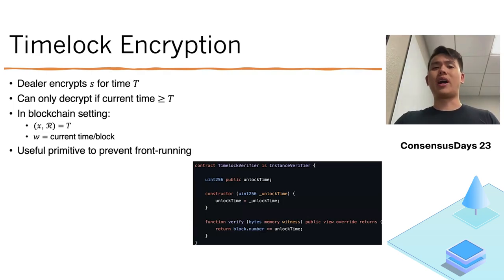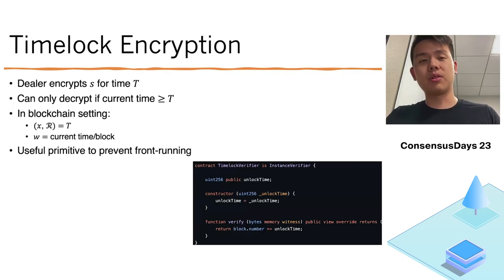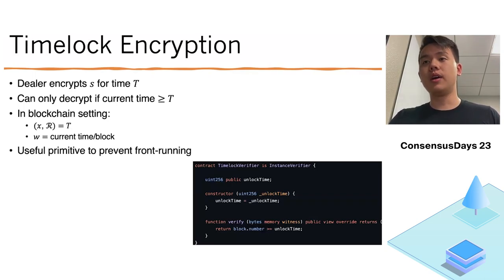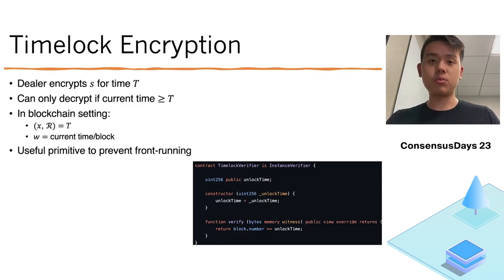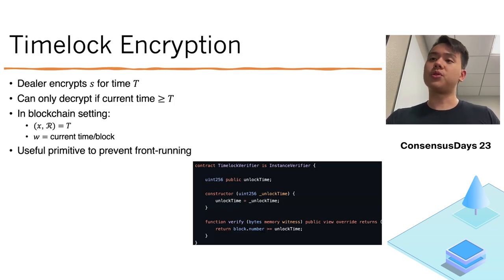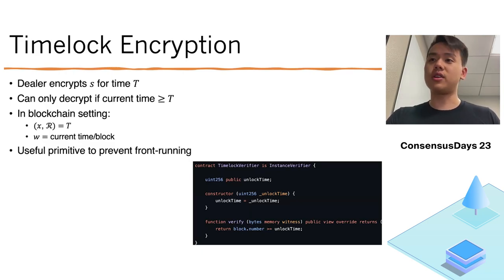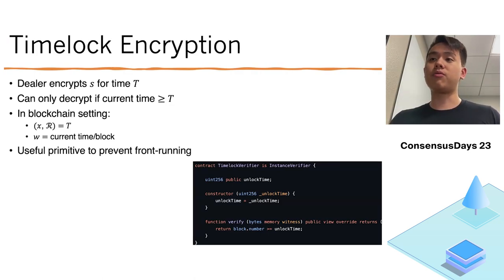What is timelock encryption and why is it useful? Timelock encryption involves a dealer which encrypts a secret for a particular time T in the future. The secret can only be decrypted if the current time is at least T, at which point everybody can have access to that particular secret. In the blockchain setting, timelock encryption is a subset of witness encryption where the instance-relation pair is just the time T in the future, and the witness is the current block time observed in the on-chain state.